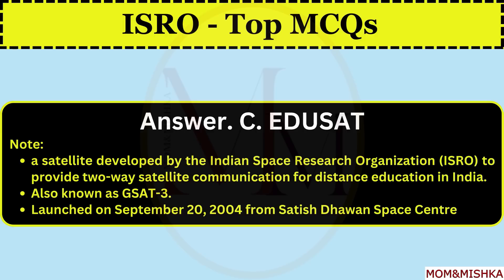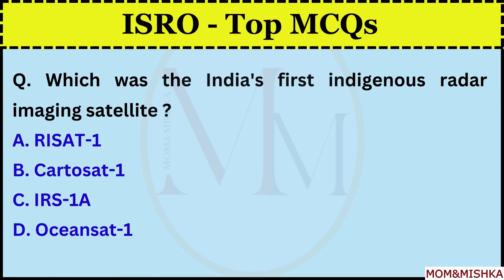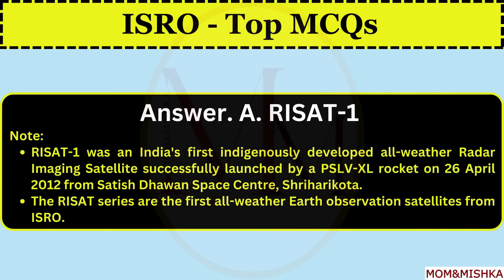EDUSAT is a satellite developed by ISRO to provide two-way satellite communication for distance education in India. It's also known as GSAT-3. It was launched on 20th September 2004 from Satish Dhawan Space Center. Which was India's first indigenous radar imaging satellite? It is the first indigenously developed all-weather radar imaging satellite, successfully launched by a PSLV-XL rocket on 26 April 2012 from Satish Dhawan Space Center, Sriharikota.